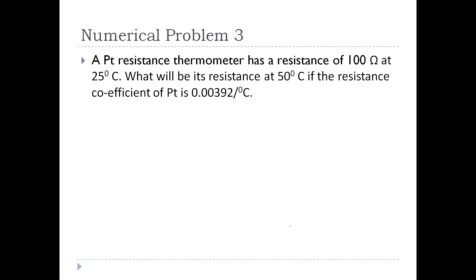A platinum resistance thermometer has a resistance of 100 ohms at 25 degree Celsius. What will be its resistance at 50 degree Celsius if the resistance coefficient of platinum is 0.00392 per degree Celsius.